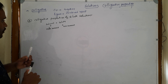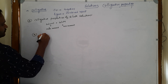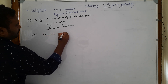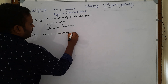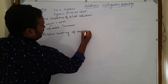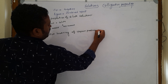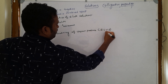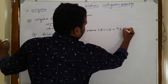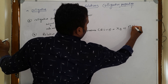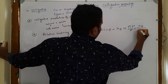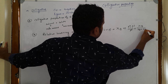There are four types of colligative properties. The first one is relative lowering of vapor pressure, also called RLVP. RLVP is equal to the mole fraction of solute, which implies (P0 minus Ps) divided by P0, equal to number of moles of B divided by (number of moles of A plus number of moles of B).